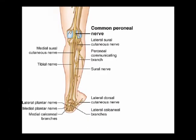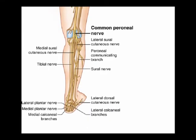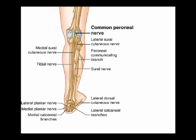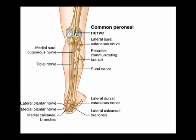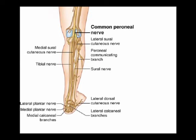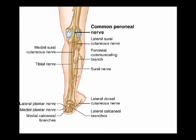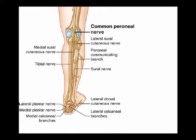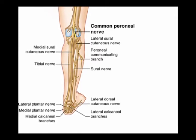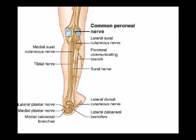Just inferior and lateral to the fibular head at the fibular neck, the common peroneal nerve bifurcates into the superficial peroneal nerve, which is also known as the superficial fibular nerve, and the deep peroneal nerve, which is also known as the deep fibular nerve.